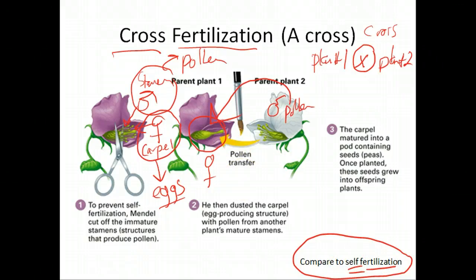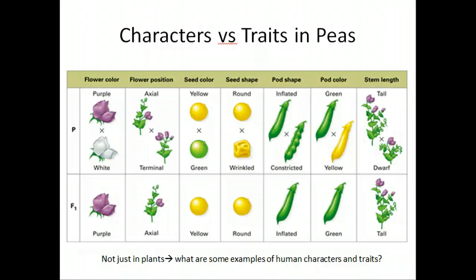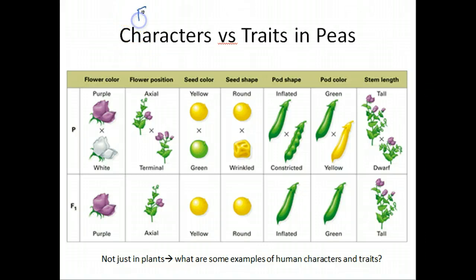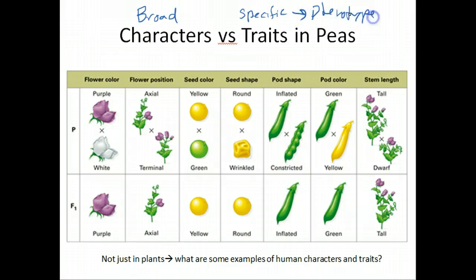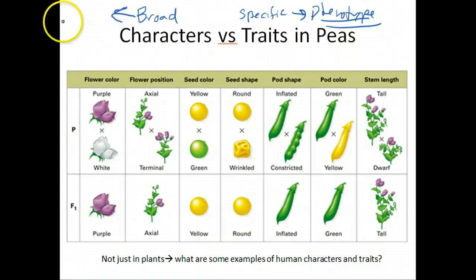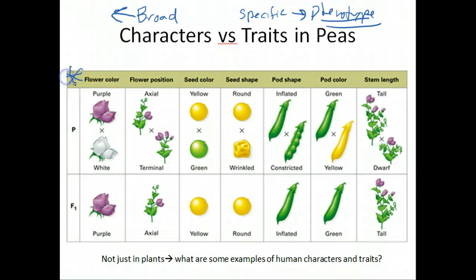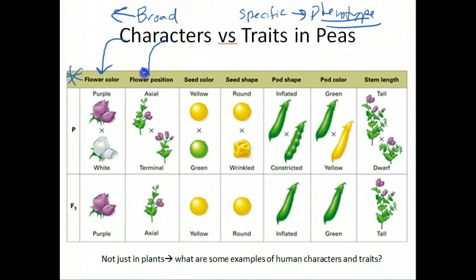I really want you to understand the difference between characters and traits in pea plants. Think of characters as being broad and traits as being specific. Traits become interchangeable with the word phenotype — they are the plant's particular phenotype. Characters are broad categories of characteristics; they don't get into the specific phenotype. For example, flower color is a character, flower position is a character, and seed color is a character — all very broad.